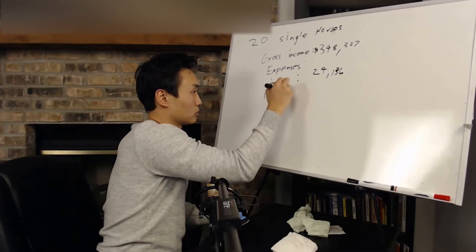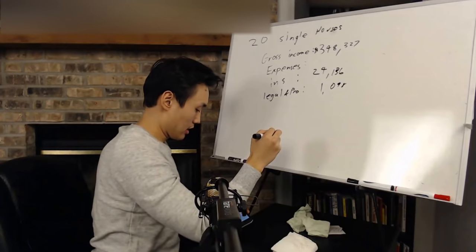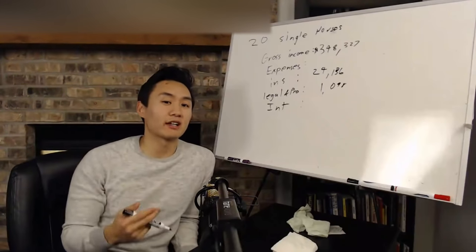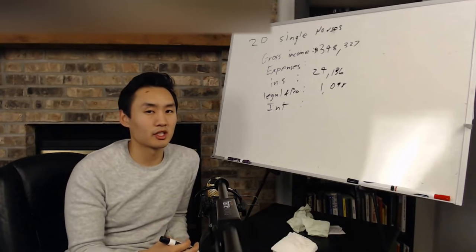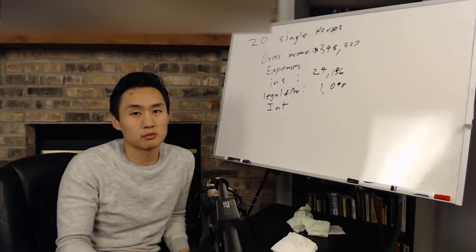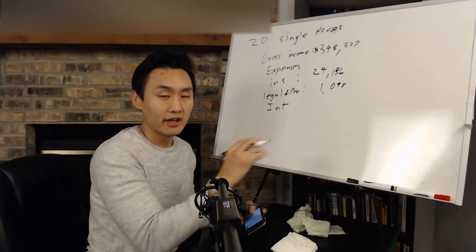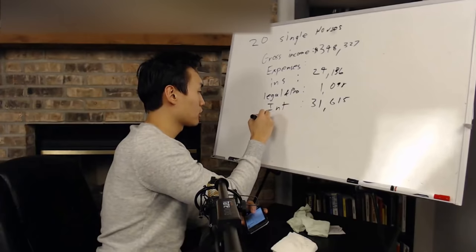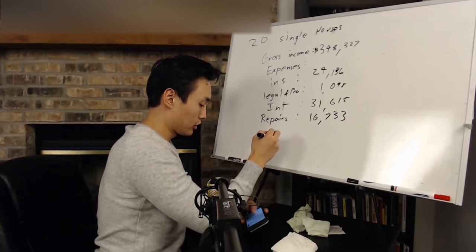So insurance ran about $24,136. Legal and professional fees was $1,098. And we move on to interest. And, again, interest, I understand it's not an actual expense, but you will see that consistently on a Schedule E. So the interest is $31,615. We have the repairs at about $16,733. We also have taxes.